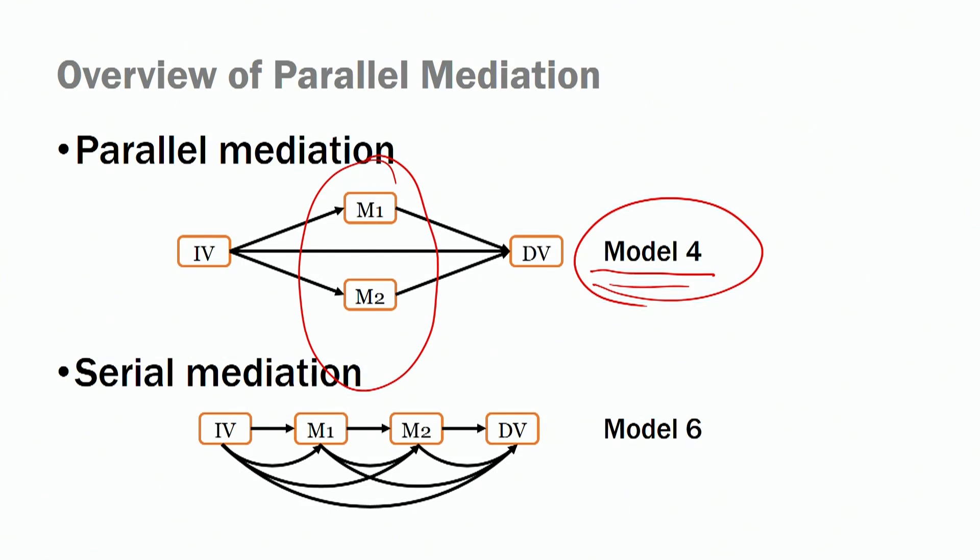To compare and contrast, there are also serial mediation models. In serial mediation models, you have a sequence of mediators influencing the relationship between your independent variable and your dependent variable — a distal relationship. For these models, you need to adopt model number six, to tell SPSS this is a serial mediation model and not a parallel one. We'll discuss serial mediation models in more depth in our next session.